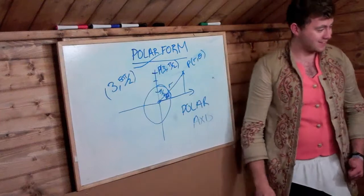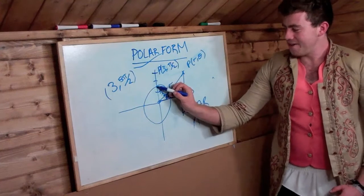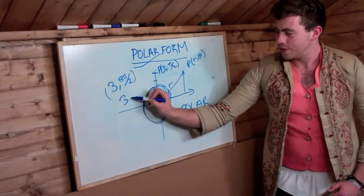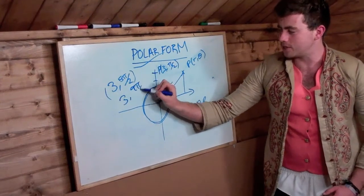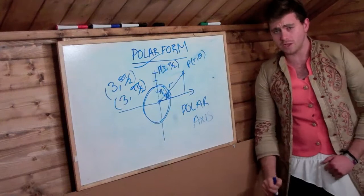What happens if you go around again? You can go around again! If we go around another 2 pi, we can also write it as 3, 9 pi by 2. And that is my interesting fact for the polar coordinate system.